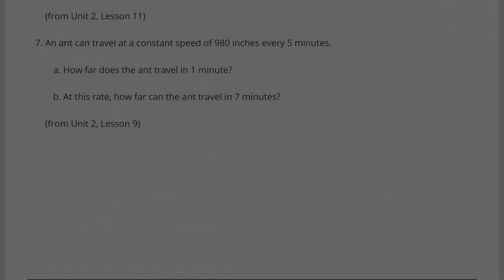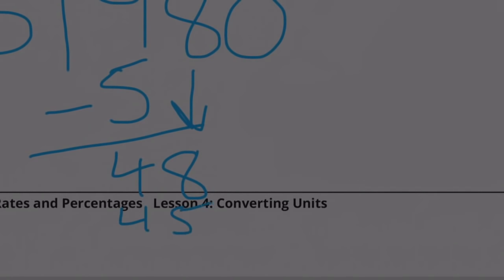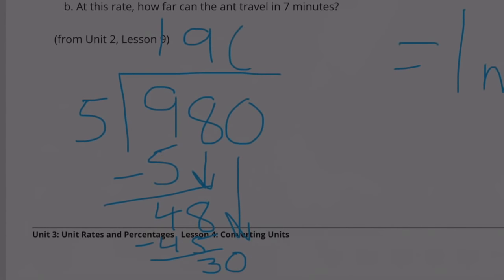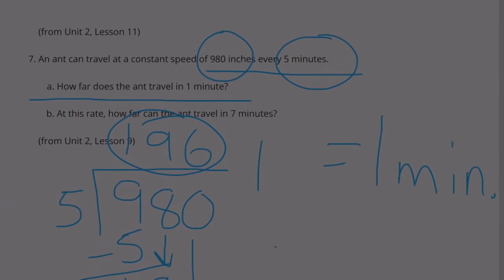Number 7: An ant can travel at a constant speed of 980 inches every 5 minutes. Part A: How far does the ant travel in 1 minute? 5 divided by 5 equals 1 minute. 980 divided by 5. Because 6 times 5 equals 30 and then we have no remainder. So 196 inches in 1 minute.